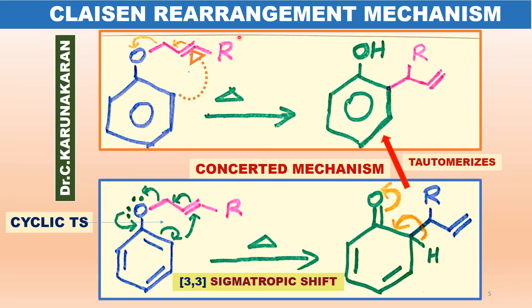This is another example with an alkyl-substituted allyl group. On heating, it undergoes Claisen rearrangement. The concerted mechanism through a cyclic transition state is shown here. This hydrogen moves over — that is called tautomerization — and the unstable compound undergoes tautomerization to give allyl phenol.